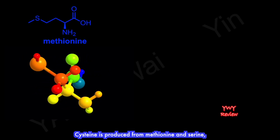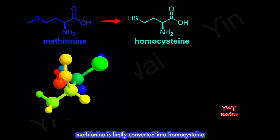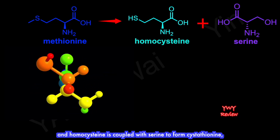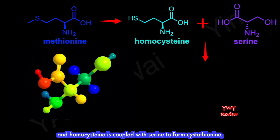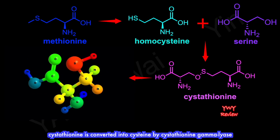Cysteine is produced from methionine and serine. Methionine is firstly converted into homocysteine, and homocysteine is coupled with serine to form cystathionine. Cystathionine is then converted into cysteine by cystathionine gamma-lyase.